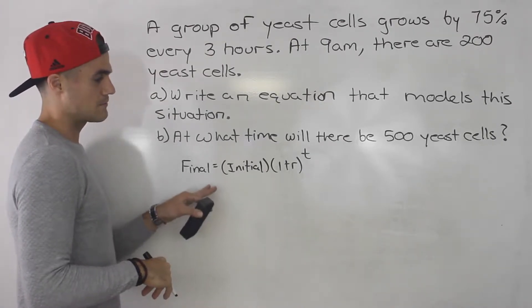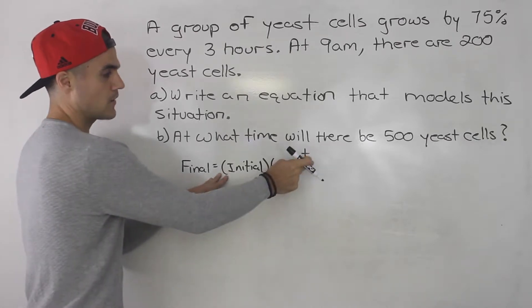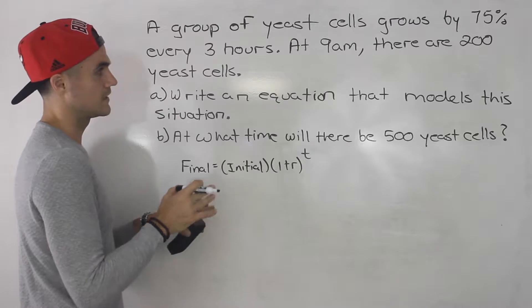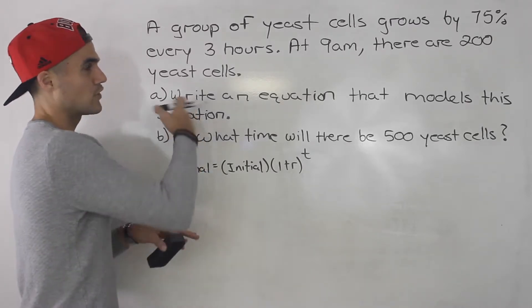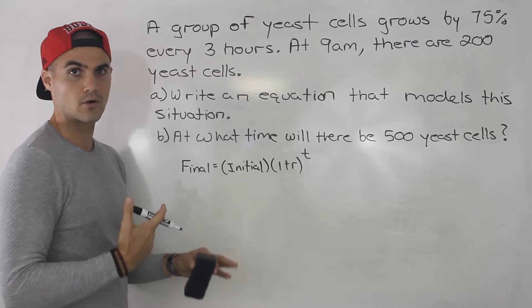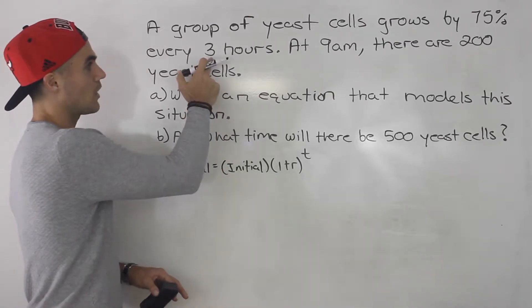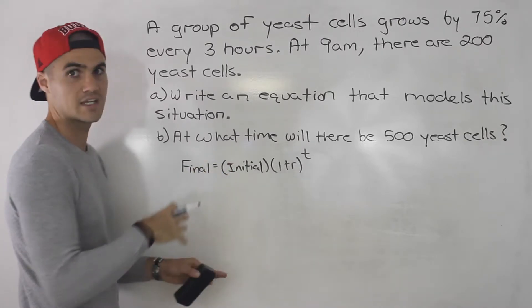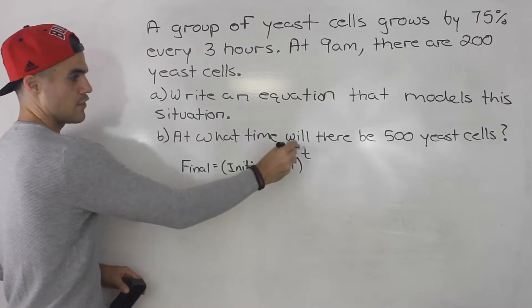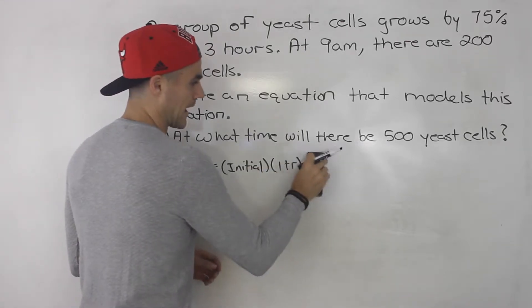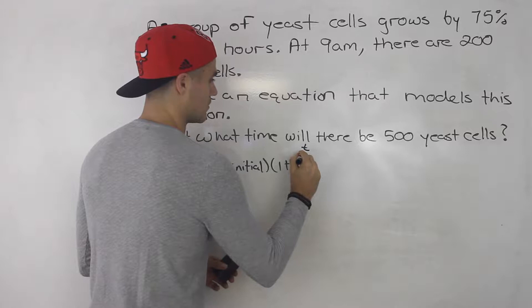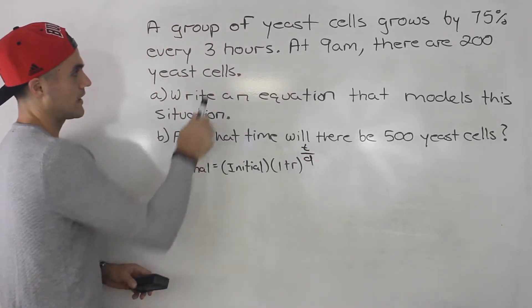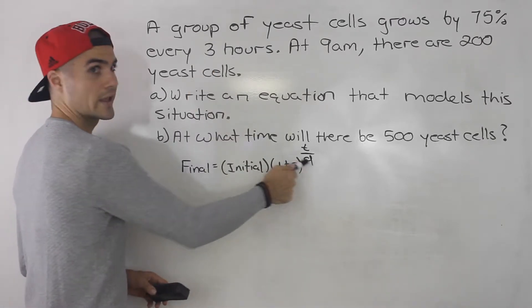If you remember in the lecture videos, I mentioned that this format with just the letter t as the exponent is for questions where they say every one hour, every one minute, or every one year. But whenever you have a number other than one, like every three hours, every 50 years, every two minutes, this exponent is going to have a denominator. Let's put a letter d there. That number is going to go in the denominator.